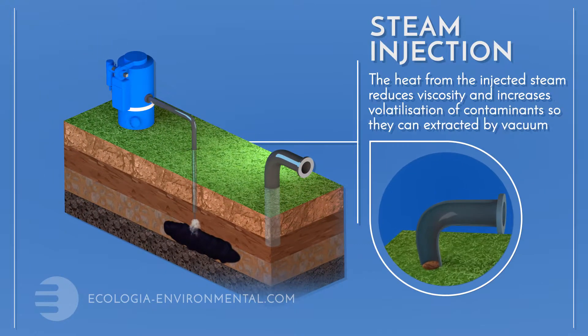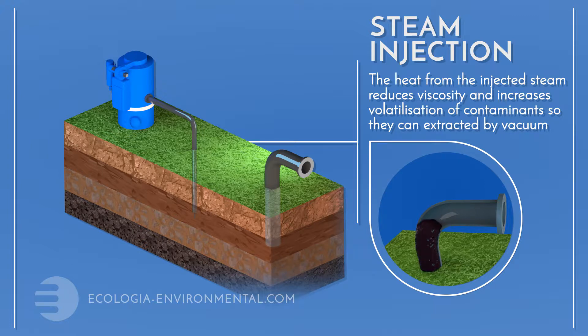Steam is injected into the ground via specially designed steel pipework. This is lagged and insulated above ground to protect the operators from burns.